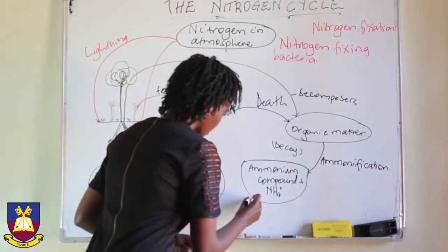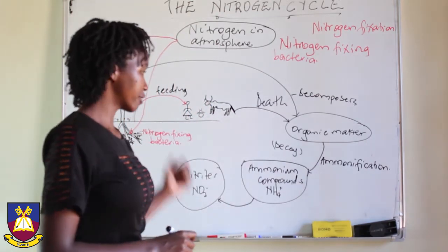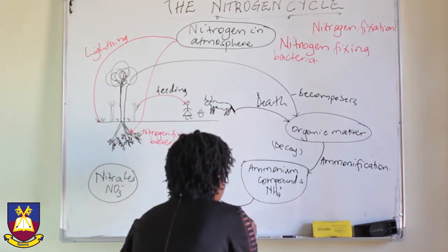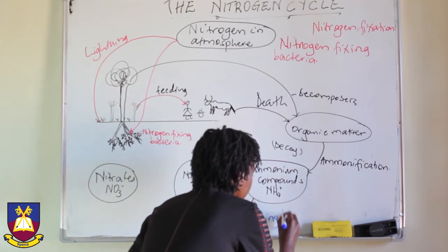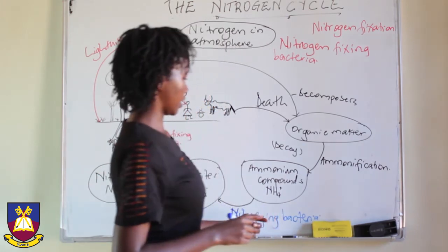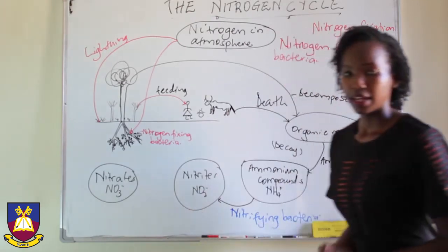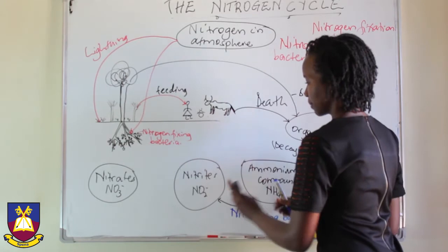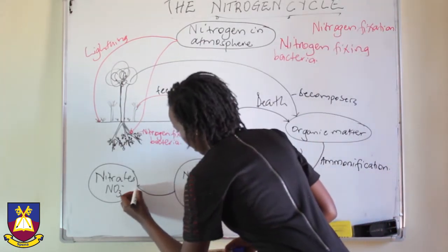These ammonium salts, by the action of a certain type of bacteria, form what we call nitrites, and then nitrates. This type of bacteria is known as nitrifying bacteria. Nitrifying bacteria convert ammonium compounds into nitrites, and there is a certain type of nitrifying bacteria that then converts the nitrites into nitrates.